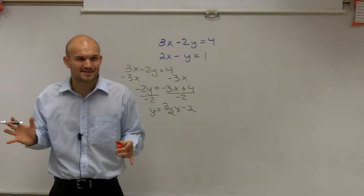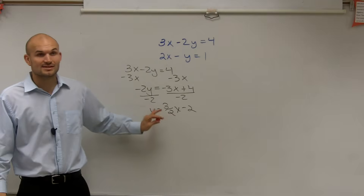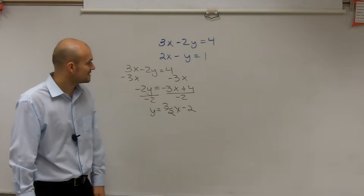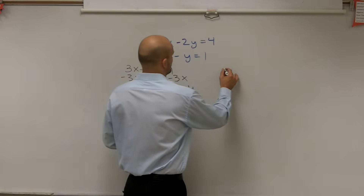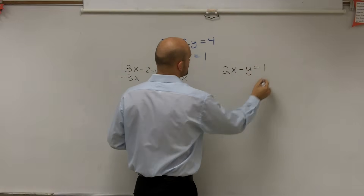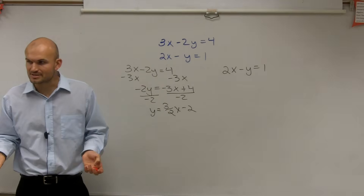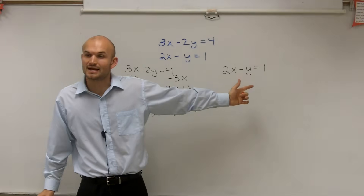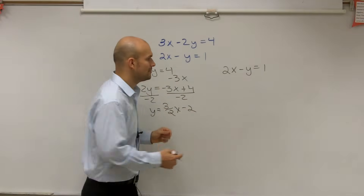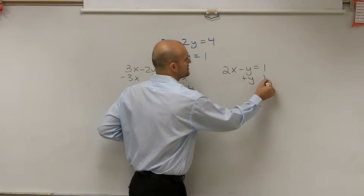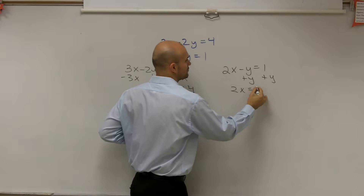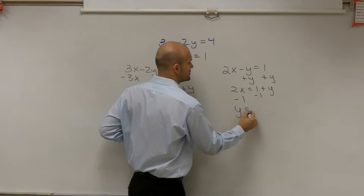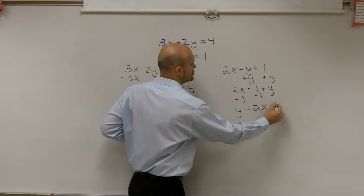Now, a lot of you might say you don't like the fraction, but remember, this is our slope, so it's actually going to be very helpful when we graph this line. So, the next one — we have 2x minus y equals 1. I'm just going to get the y by itself. I could subtract the 2x and then divide by negative 1. However, for this problem, I'm actually going to add the y to the other side. So, I have 2x equals 1 plus y, and then I'll just subtract the 1. So, my final answer is y equals 2x minus 1.